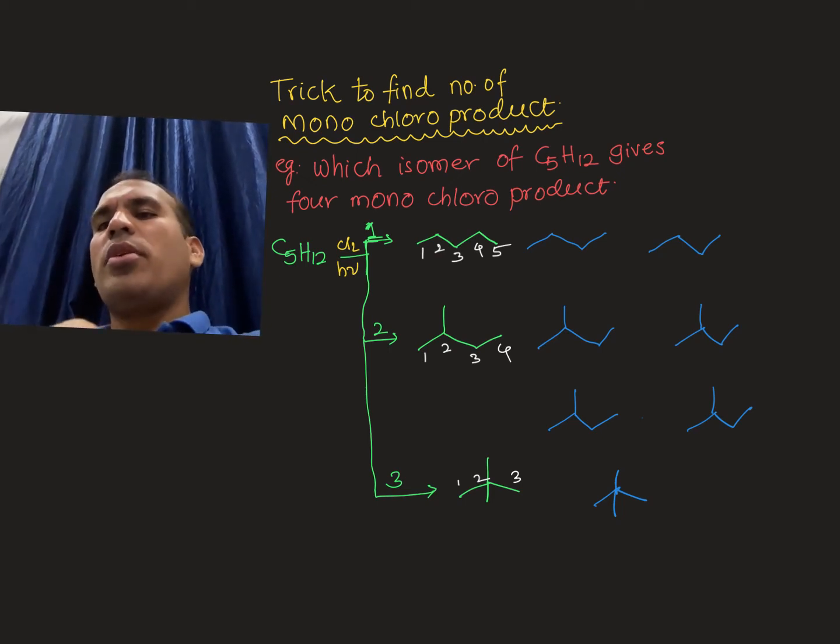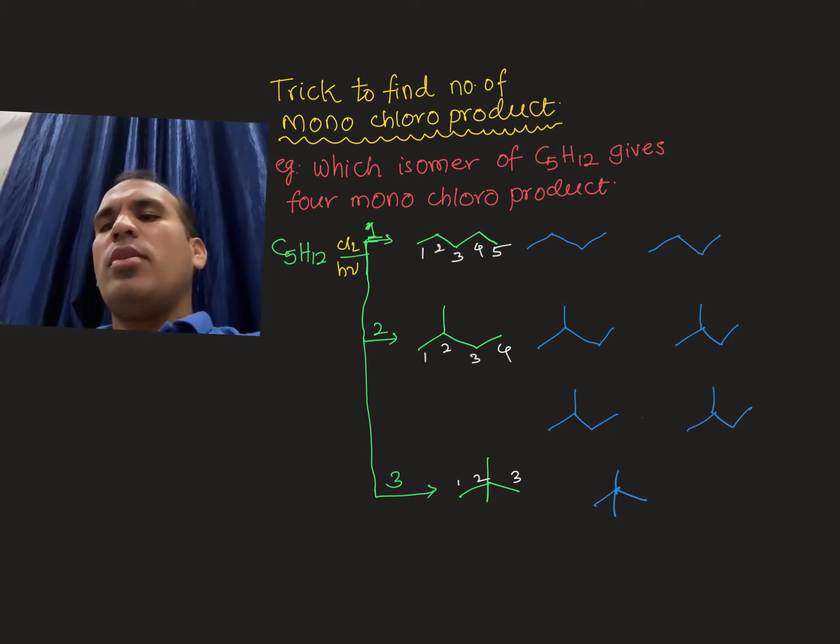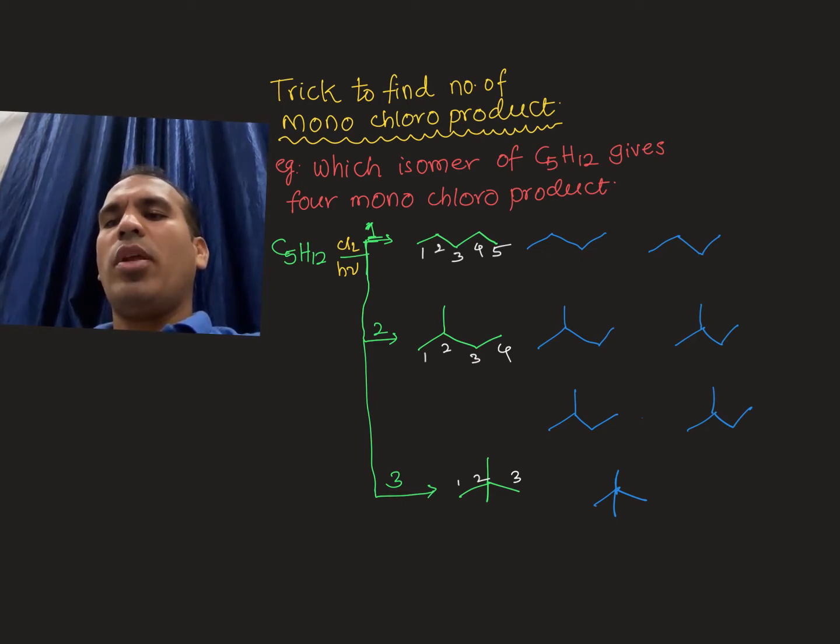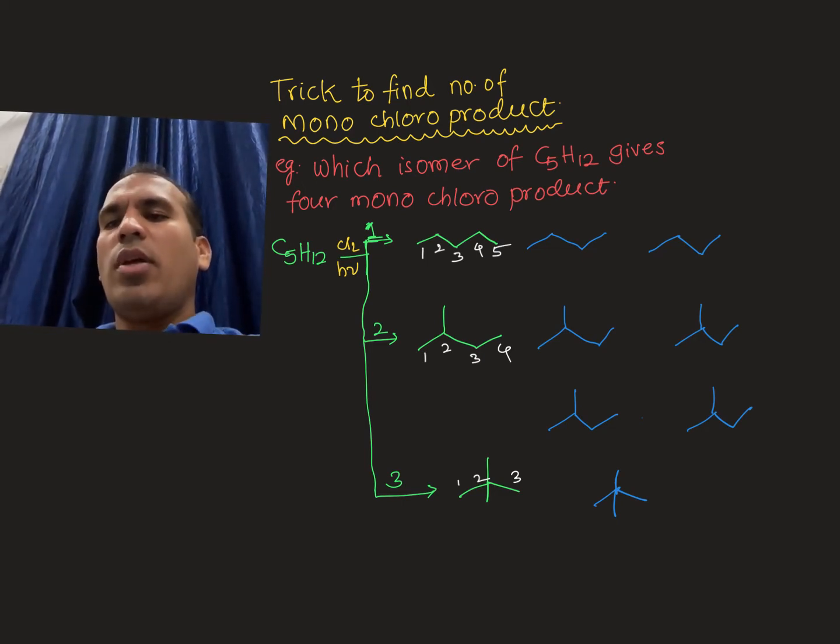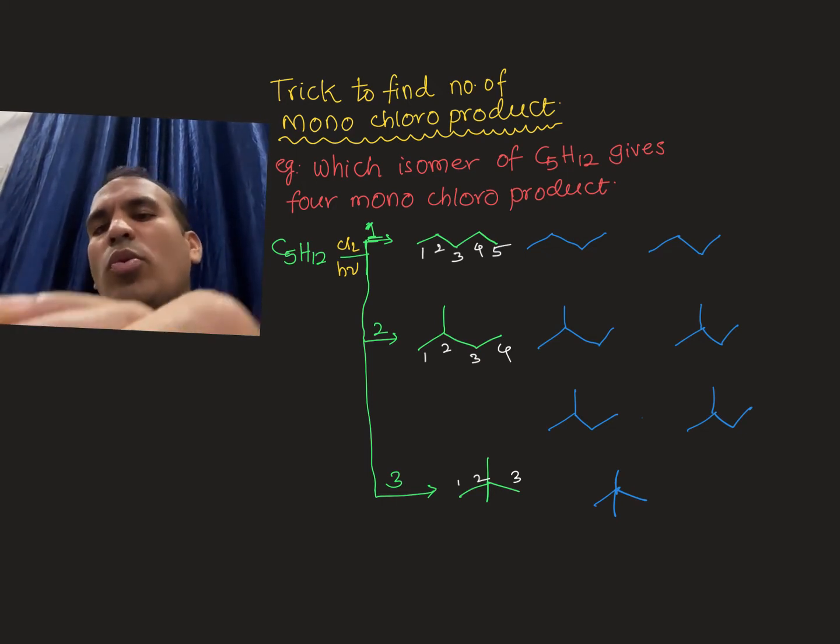Hi everyone, today I want to discuss the trick to find the number of monochloro products. One example is: which isomer of C5H12 gives four monochloro products? First, what we have to do is for any given alkane, first write how many constitutional isomers form, then attach chlorine at the different carbons.